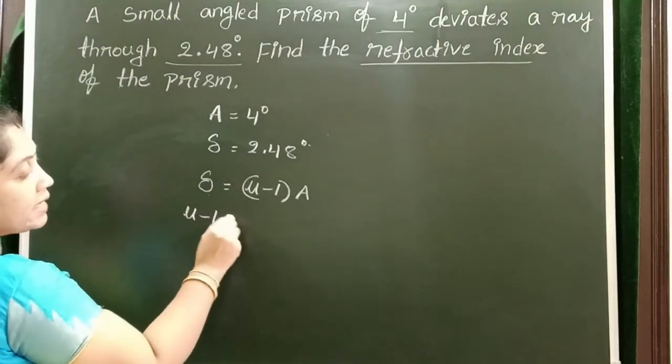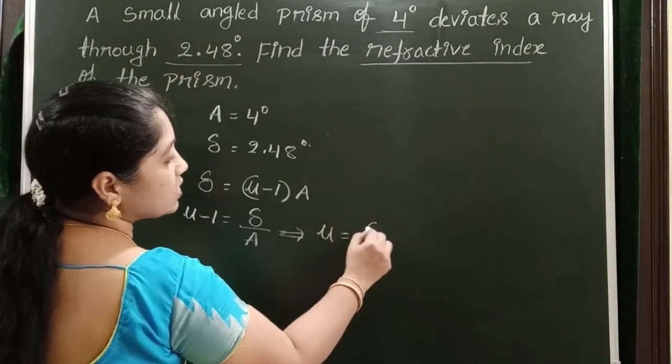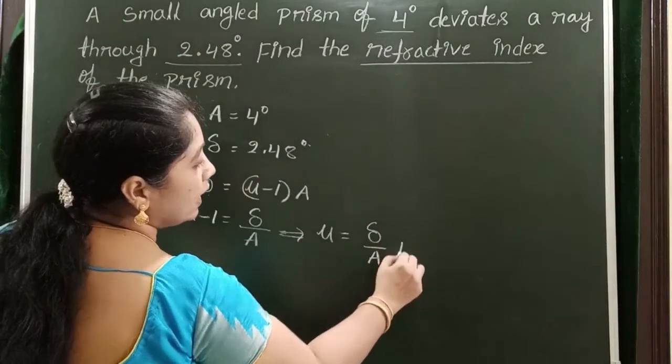From this, mu minus 1 is equals to delta by A, and mu is equals to delta by A plus 1.